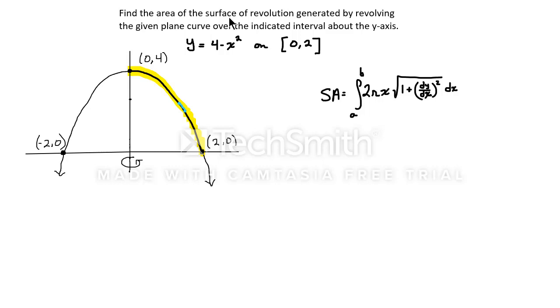Find the area of the surface of revolution generated by revolving the given plane curve over the indicated interval about the y-axis. So we have that the curve of interest is y equals 4 minus x squared, and the interval of interest is 0 to 2.